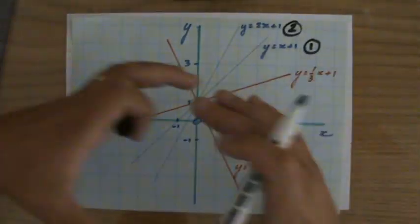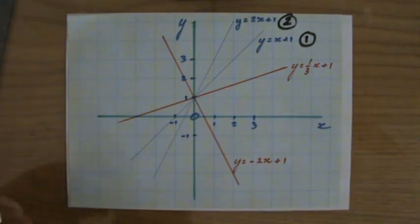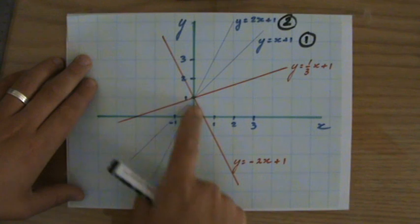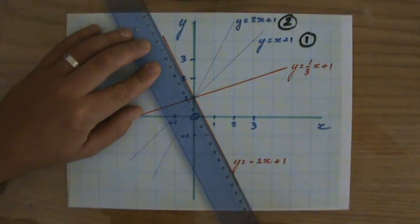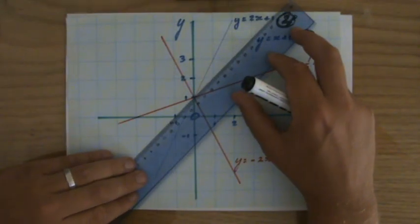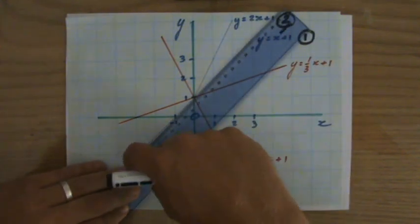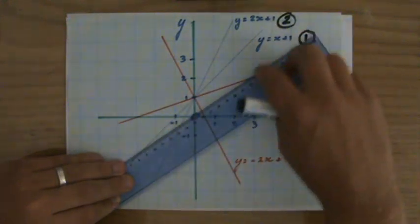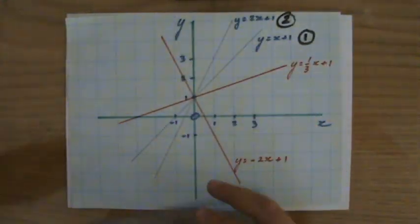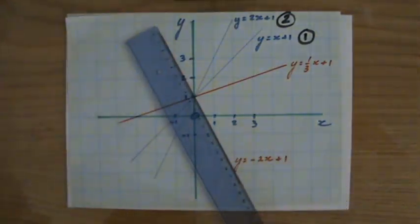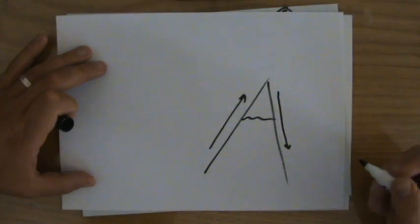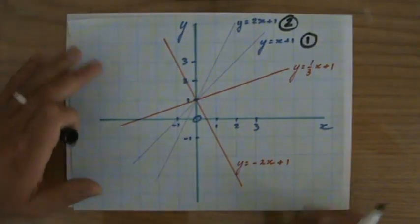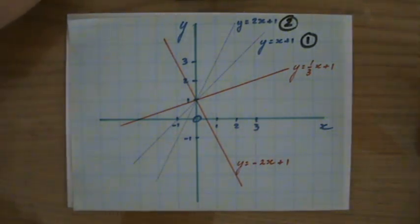Now let's have a look at this new line. What is the difference between this line and those other lines we already discussed? You could say that those lines go up, while this line is going down — like going up and down a mountain. So this line is going down. Let's see what kind of implication that will have for the gradient.